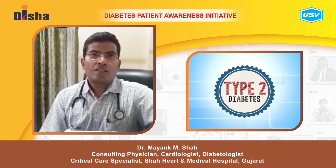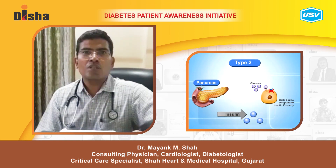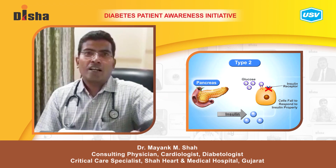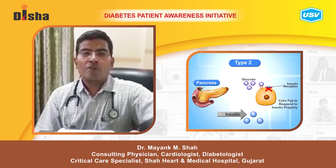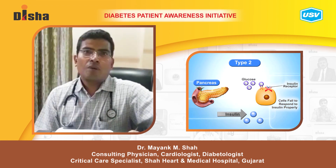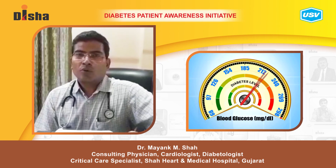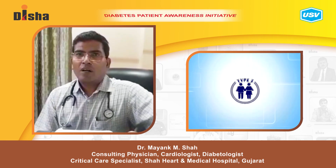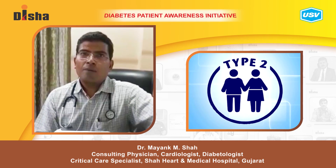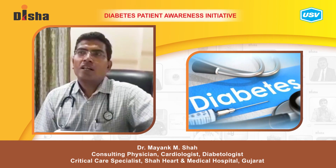Type 2 diabetes is usually developed when there is some sort of insulin resistance, where the body produces insulin but is not able to utilize it properly. At the same time there is some deficiency of insulin. Initially the pancreas will try to make up for it, but eventually it gives up and blood sugar becomes high. More than 90% of diabetes patients in the world are type 2, and generally they are obese with late-onset diabetes.